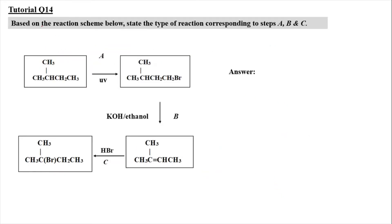Now for tutorial question 14, based on the reaction scheme, we state the type of reaction for steps A, B and C. First, the alkane is applied under UV and CH₃ becomes CH₂Br — one of the hydrogens is replaced with Br. So it is a substitution reaction. Because UV is applied, free radicals are formed, so it is a free radical substitution reaction.